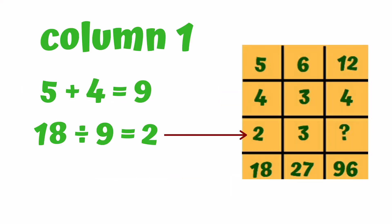Let's see the second answer. In the second row, friends, what is the relation? 5 plus 4 equals 9. In the last row, we find 18 divided by 9. The value is 2.